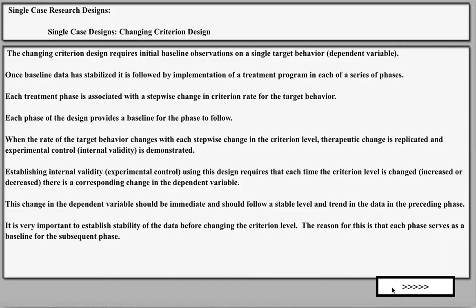The changing criterion design requires an initial baseline, just like any of the other single case designs, on a single target behavior. We're looking for that baseline to stabilize in terms of level and trend, because that means it's reached its natural level in the environment and without intervention it will stay at that level. That's referred to as baseline logic.